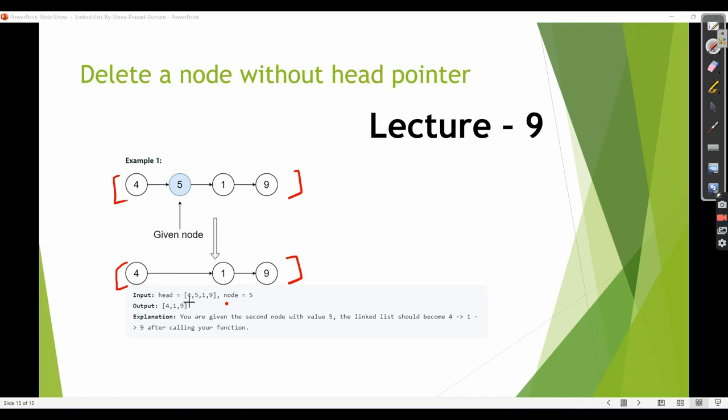If you carefully observe, 4, 5, 1, 9, given node as 5. We need to delete the second node with the value of 5. Here is the second node, first is 4. But the thing here is like we are not going to have access to our head pointer. Let's try to understand how we can solve this problem.